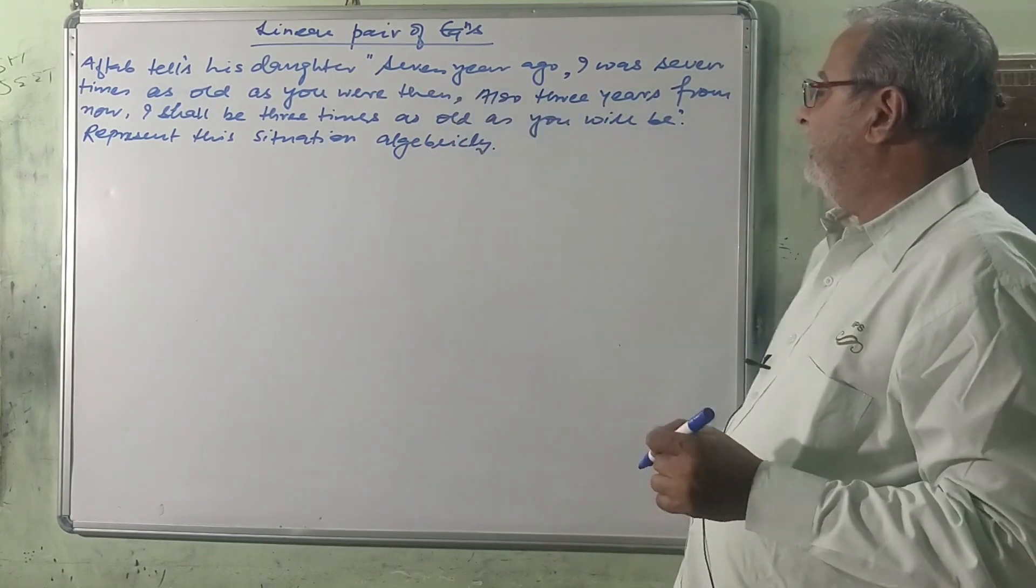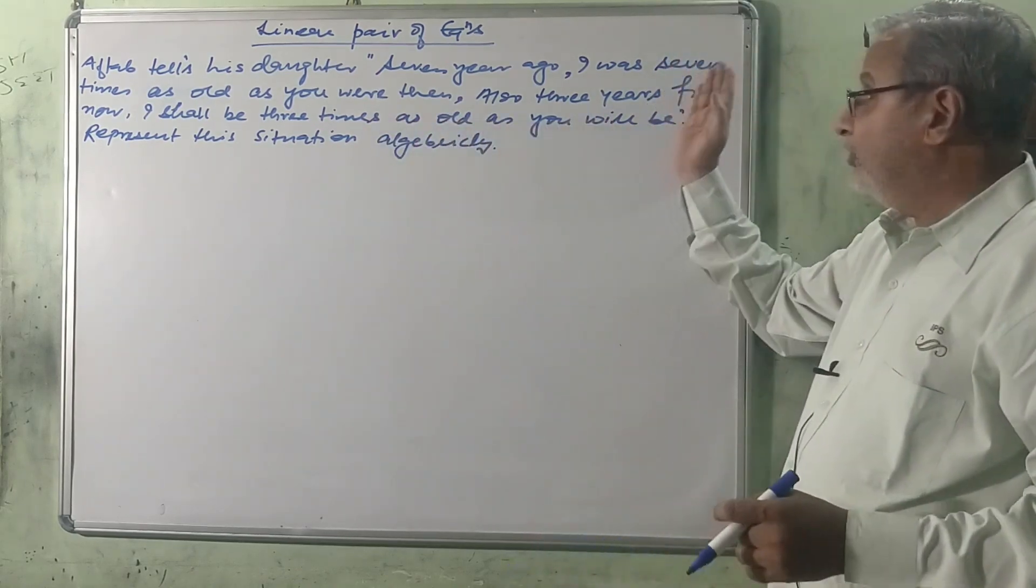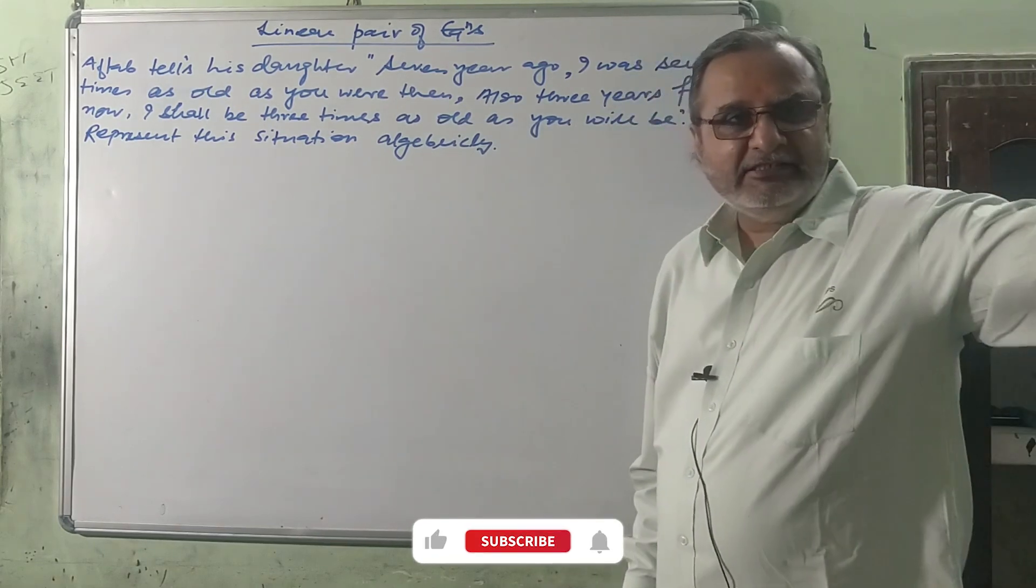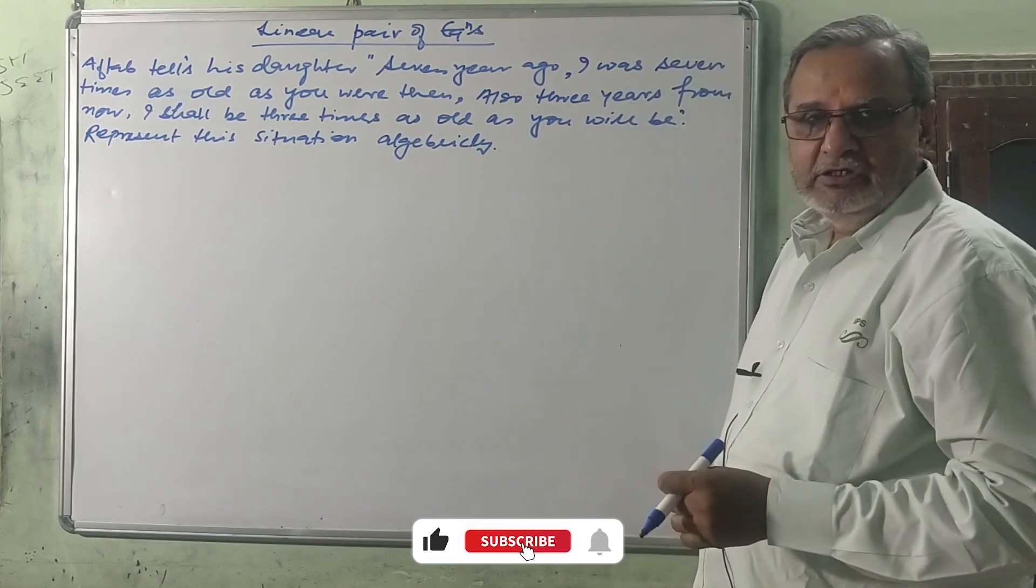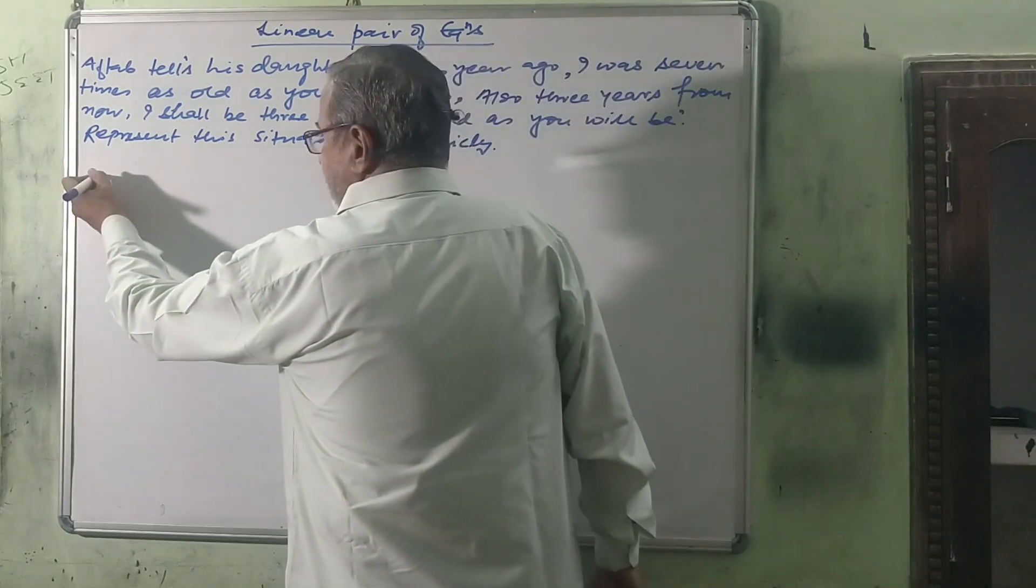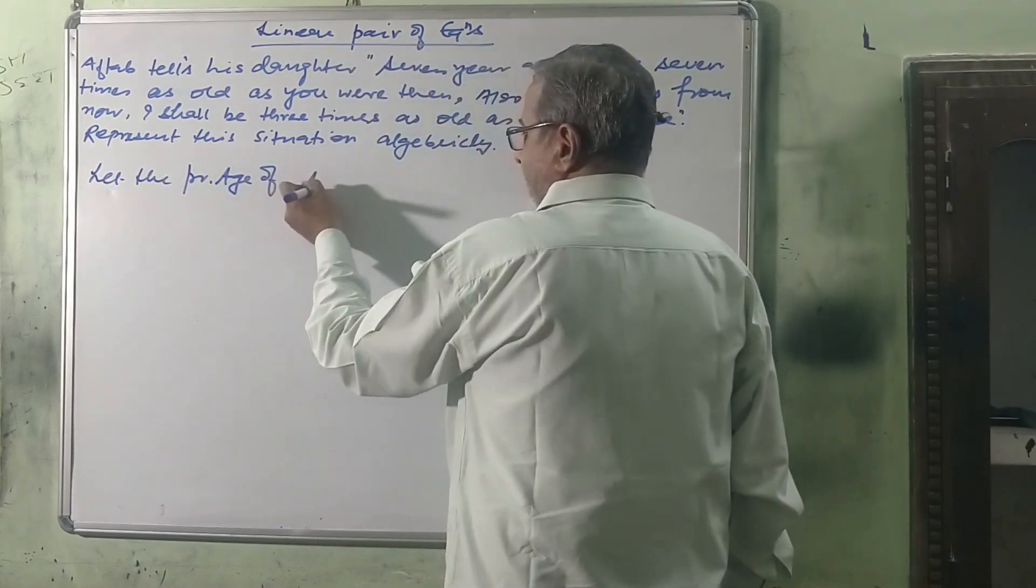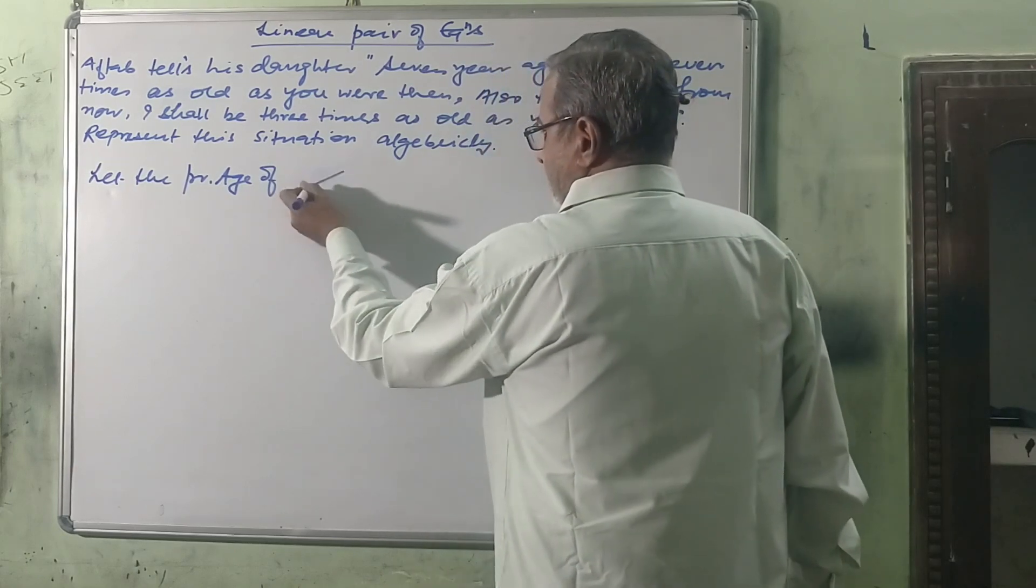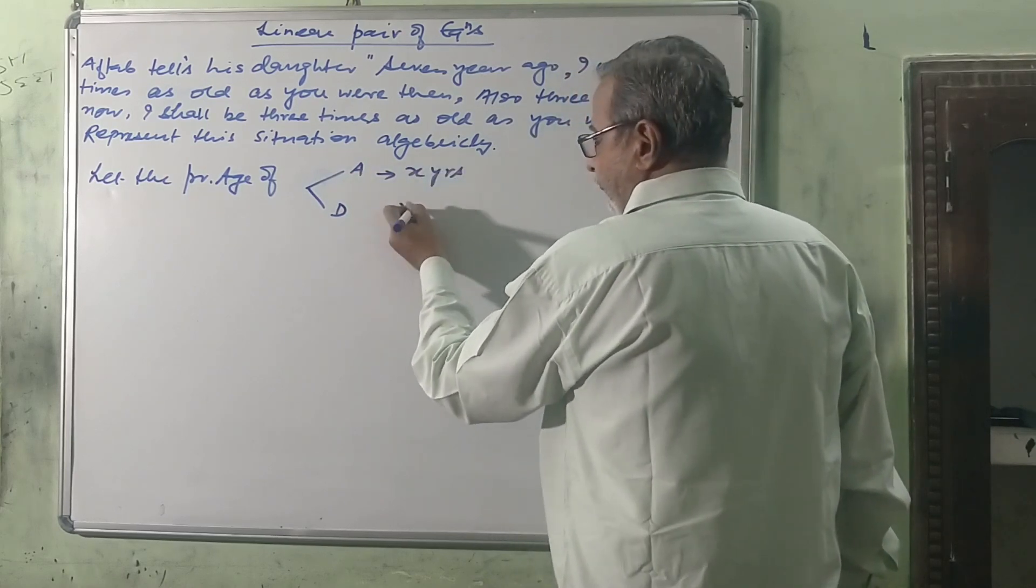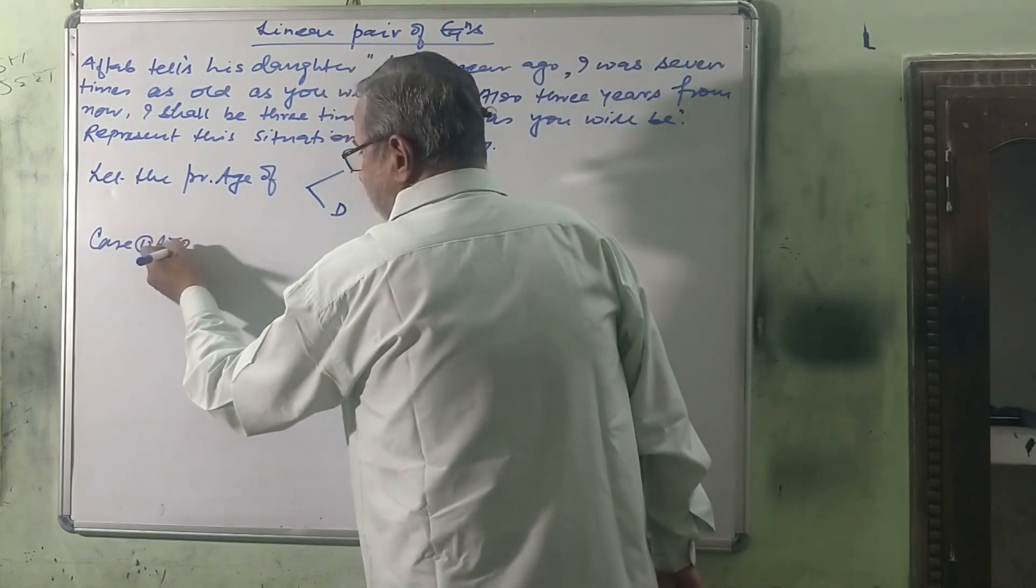And the second condition is: also three years from now I shall be three times as old as you will be then. First situation is past and second situation is future, so we are in present. Let the present ages of father and his daughter be x years and y years.